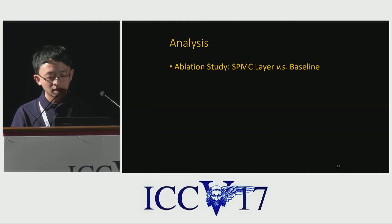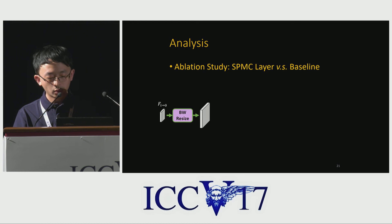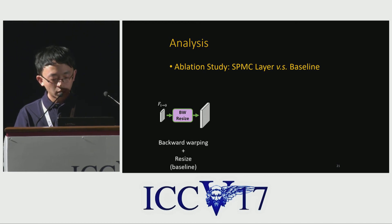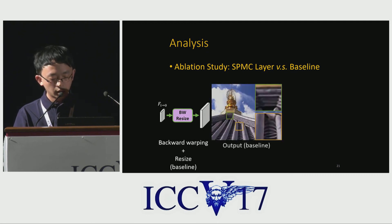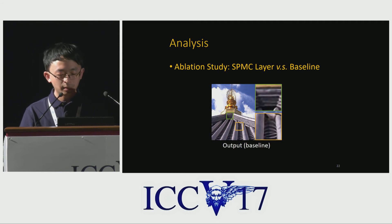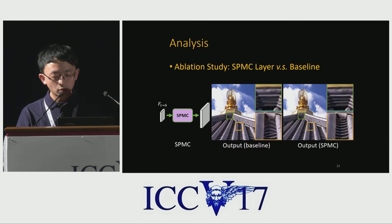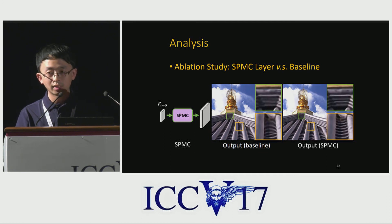In the next experiment, we do an ablation study of our SPMC layer. We substitute this layer with a baseline module — backward warping followed by upsampling — which can also compensate motion and increase resolution, and is widely used in previous CNN-based methods. In this example, the tiles on the roof contain severely forced structures due to aliasing. With our designed SPMC layer, the structures of tiles in the result are very faithful to the ground truth. We believe only by properly handling motion in sub-pixel precision can we recover good results.